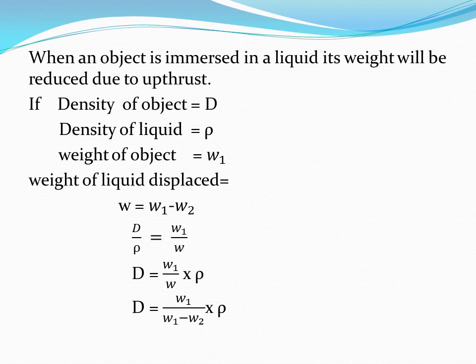If the density of the object is d, density of the liquid is ρ, weight in air is w1, then the weight of liquid displaced is w1 − w2, where w2 is the weight of the object in liquid. This gives the relation: d = (w1 / (w1 − w2)) × ρ.